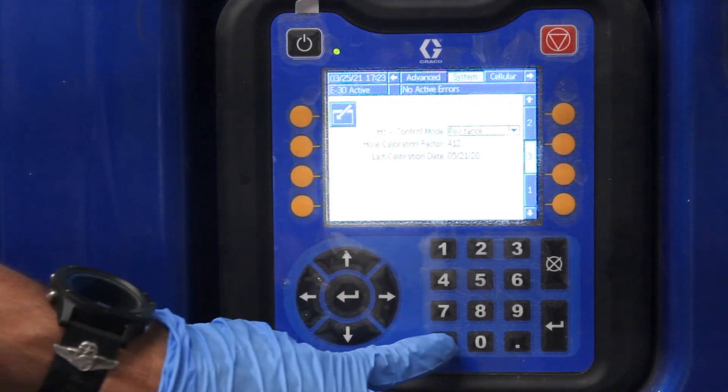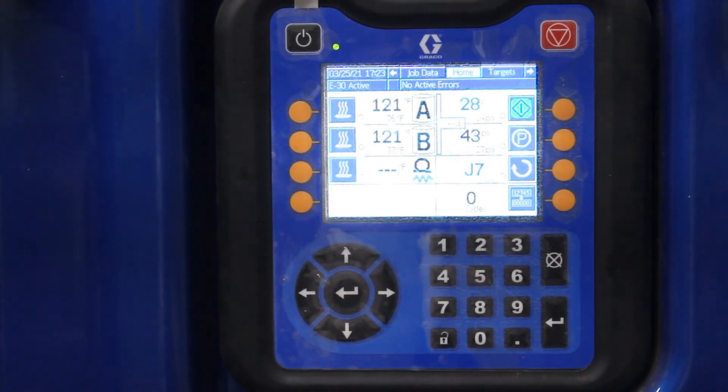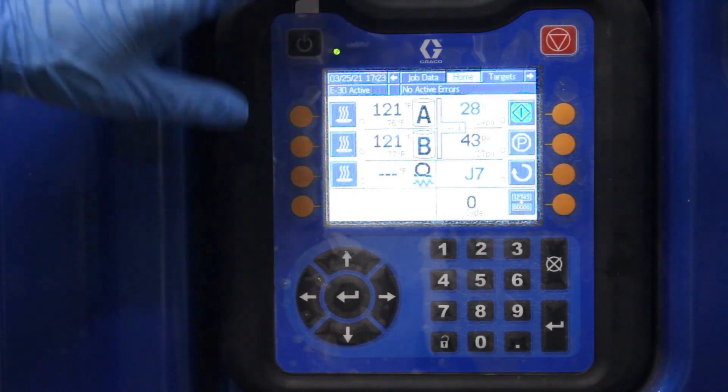And then to get out of this screen, just push the lock button back to the main screen again. That basically covers the function of this.